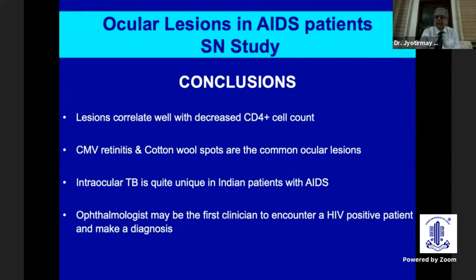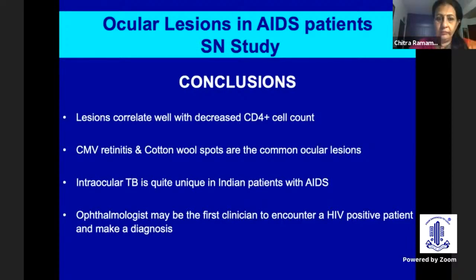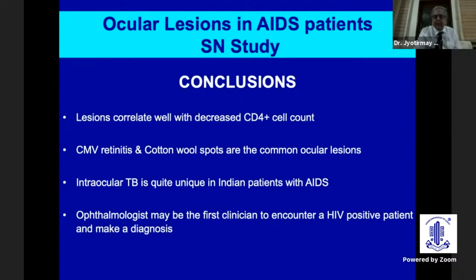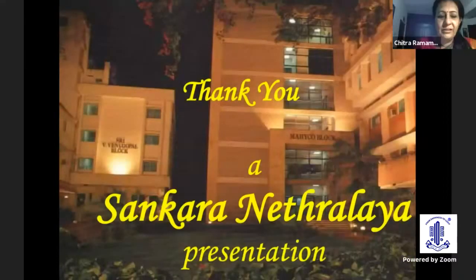In conclusion, in HIV, ocular lesions correlate with decreased CD4 cell count — a CD4 count of 50 or less is associated with CMV retinitis, while slightly higher counts are associated with TB or toxoplasmosis. CMV retinitis is the most common posterior segment involvement. Intraocular TB is quite unique in Indian patients and should always be remembered. Importantly, ophthalmologists may be the first clinicians to encounter an HIV-positive patient and make the diagnosis of HIV. Thank you very much.